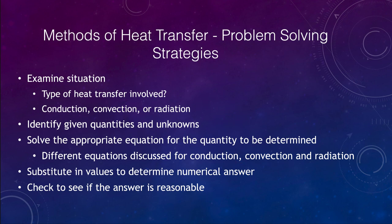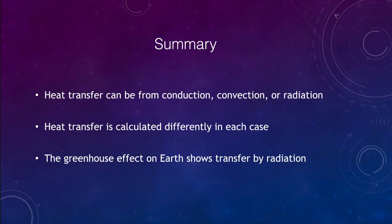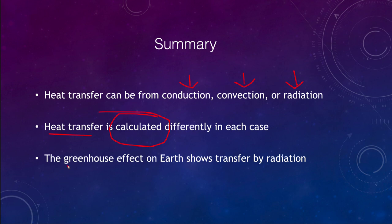To summarize, we talked about the three methods of heat transfer: conduction, convection, and radiation. Each has a different equation for calculation. We also discussed the greenhouse effect on earth and how it demonstrates heat transfer by radiation, keeping the earth warm enough for liquid water and life to exist. That concludes this lecture on heat transfer — we'll be back for another topic in physical science. Have a great day everyone, and I will see you in class.